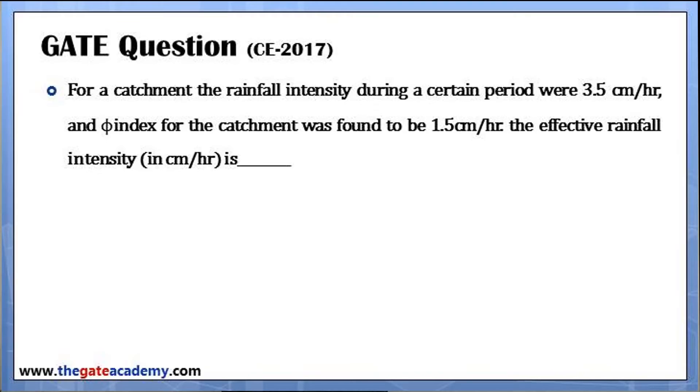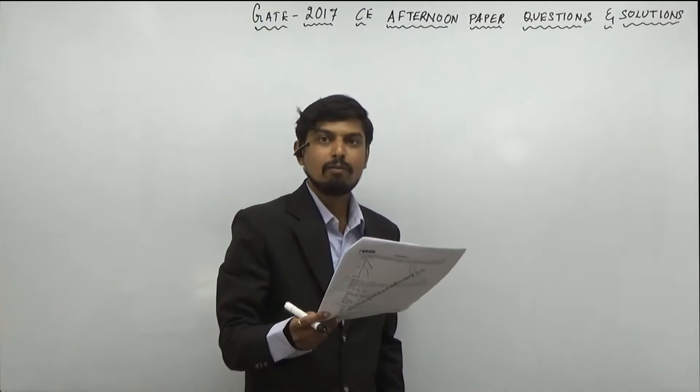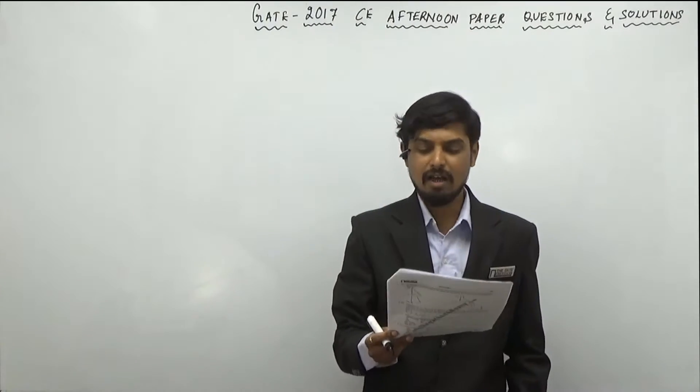For a catchment, the rainfall intensity during a certain period was 3.5 cm per hour, and phi index for the catchment was found to be 1.5 cm per hour. The effective rainfall intensity in cm per hour is dash.